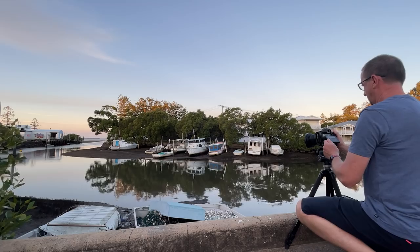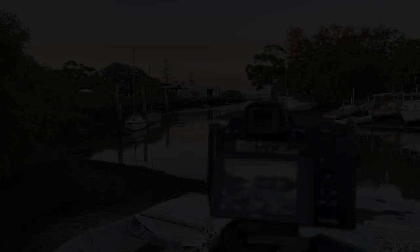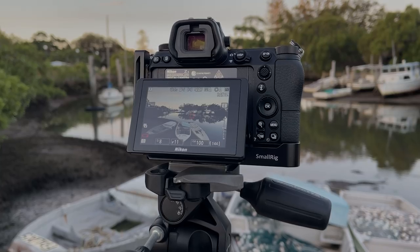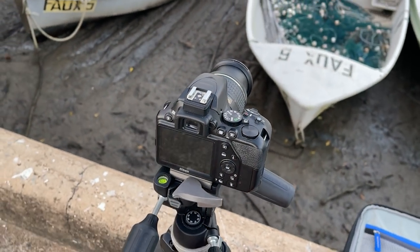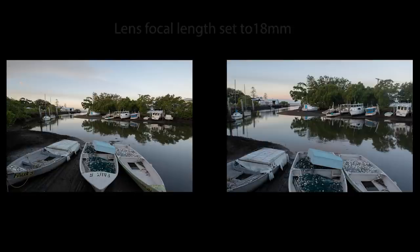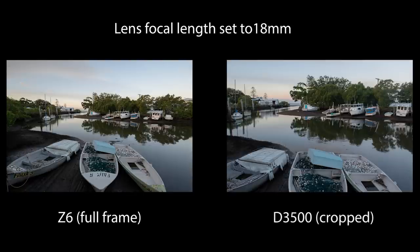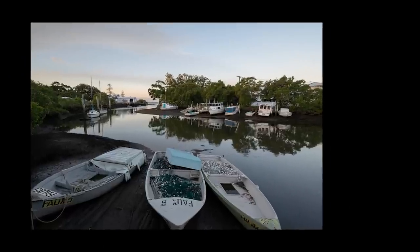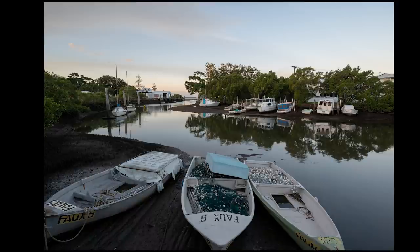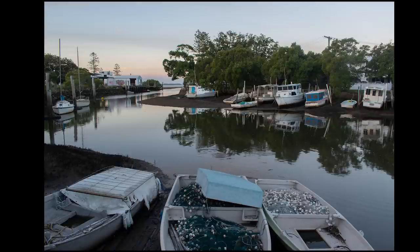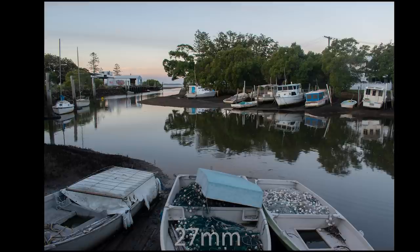To demonstrate how the crop factor affects wide angle lenses, I took an image with a Nikon Z6 followed by an image with a Nikon D3500. Both shots were taken with the lens set to 18mm, but as you can see with the full frame sensor of the Z6 we get to see the big picture — this is what the world looks like through a lens with a focal length of 18mm. With the second image however we lose the wide field of view simply because of the crop factor. 18mm is effectively now 27mm, because 18 times 1.5 equals 27.